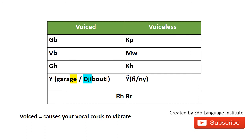Your vocal cords are at your Adam's apple. When you put your fingers there and pronounce the GB sound — which many West African languages have — you can feel your vocal cords vibrating. That makes it a voiced sound. Compare that to KP — 'KP' — which is rather a voiceless sound.